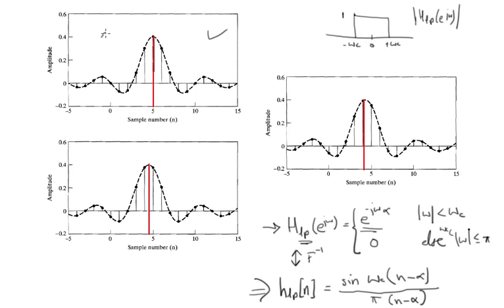When α equals 5, which is an integer, the impulse response is symmetric around n = 5. The amount of delay is α = nd = 5, which belongs to integers, and the impulse response is symmetric about that point. In the second case, where α equals 4.5 — which is an integer plus one-half — the second property holds, and the impulse response will again be symmetric about α = 4.5.